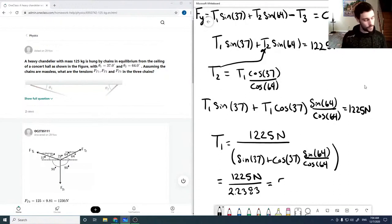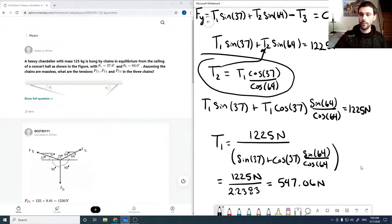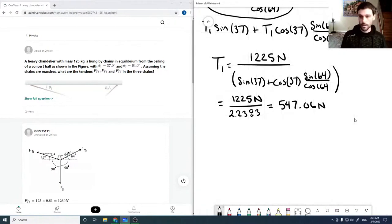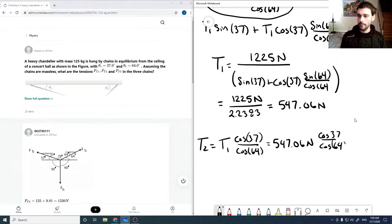And then using our T2 equation up here we can solve for T2. So T2 is T1 cos 37 over cos 64, which is 547.06 times cos 37 over cos 64, which comes out to 996.64 newtons.